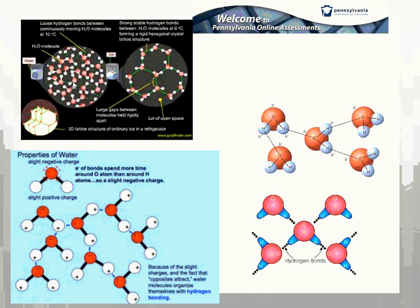Liquids, at least for water, don't tend to arrange themselves as neatly with hydrogen bonds. This is pretty interesting because most compounds, when they are in their solid state, are actually more dense and more clumped together than in the liquid state. Water, however, is an exception — ice floats on top of water. The reason that happens is when ice freezes, it spaces out to maximize the number of hydrogen bonds.